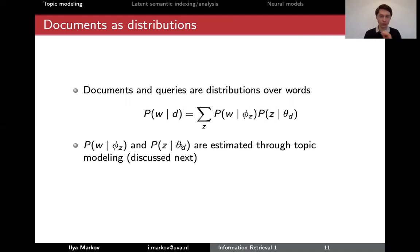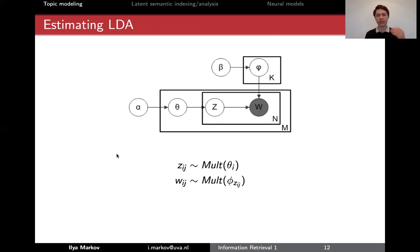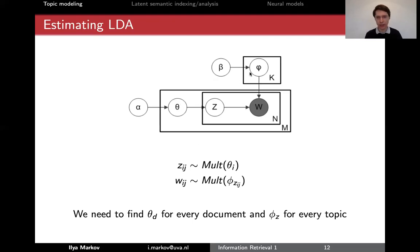In summary, documents and queries are still represented as distributions — it's just that these distributions are now computed differently based on topics. The two key unknown quantities are: the distribution of words in a topic, and the distribution of topics in a document. Those topics like 'children,' 'budgets,' and 'arts' are not given — they must be estimated from text. And as long as we have these distributions, we match them using QLM or KL divergence, just as with language models.